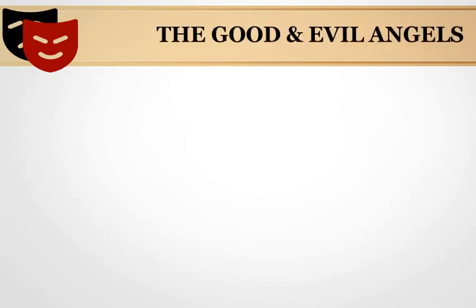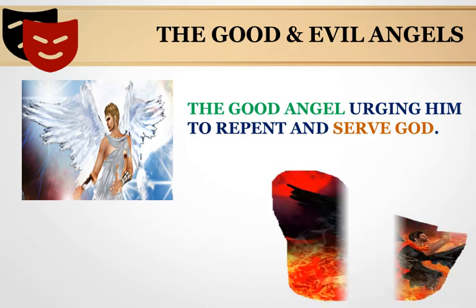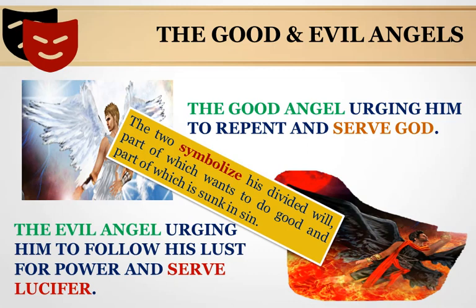The second important symbol in Dr. Faustus is the good and evil angels. The angels appear at Faustus's shoulder early on in the play — the good angel urging him to repent and serve God, and the evil angel urging him to follow his lust for power and serve Lucifer. The two symbolize his divided world: part of which wants to do good and part of which is sunk in sin. That was the end of our lecture today.